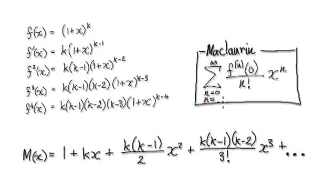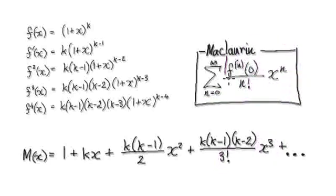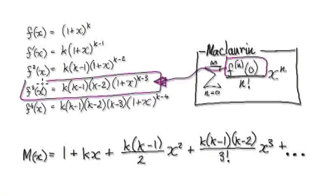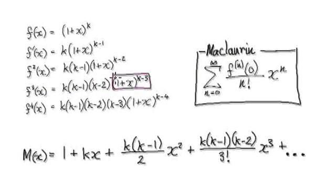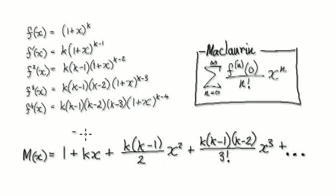For n equals 3, we have 3 factorial in the denominator and x to the power of 3. The third derivative evaluated at 0: putting x = 0 makes the bracket 1, so 1 to that power is 1, leaving just k(k-1)(k-2). That gives the term k(k-1)(k-2)x³/3!. You can now see the pattern. Once you've got the first few terms, you can take it to infinity. So this is your Maclaurin series.